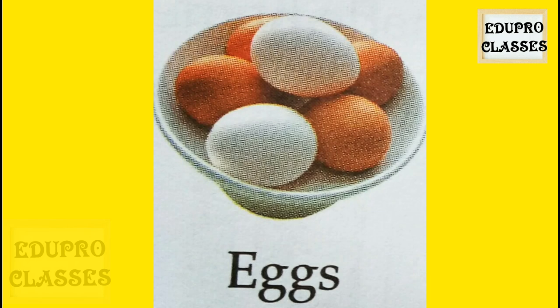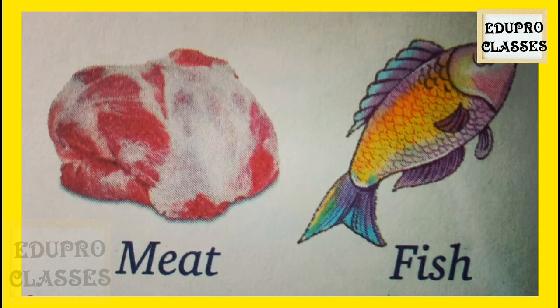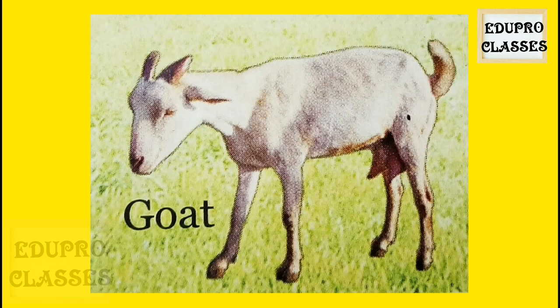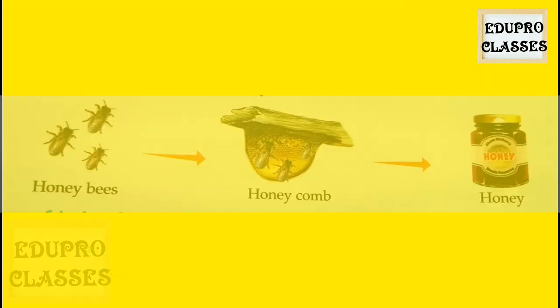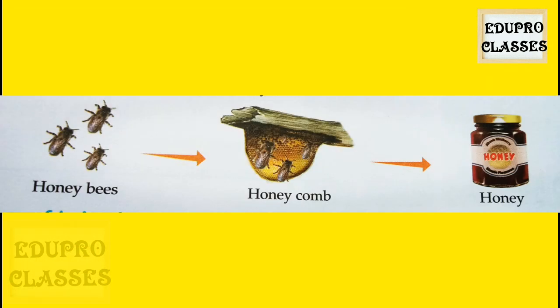Kids, milk is a complete food, so we should drink it twice a day. Hens and ducks give us eggs. Eggs help our body to grow. Fish, goat, and cock give us meat to eat. बच्चो कुछ लोग meat भी खाते हैं, उन्हें हम non-vegetarian कहते हैं। We get honey and wax from honey bees. Honey is also used to make many medicines.